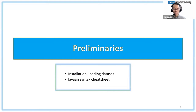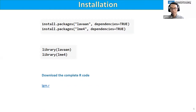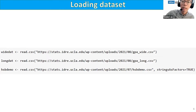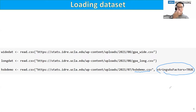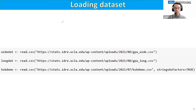Let's jump straight into the seminar. We've been through installing and loading packages and downloading the R code. You can import the data set directly into R because we've uploaded it to the server, so you can download it using the read.csv command. Just copy and paste the syntax into R. An important option for the HSB demo data set is 'stringsAsFactors', which converts string or character variables into factor variables in R, allowing us to use categorical variables.